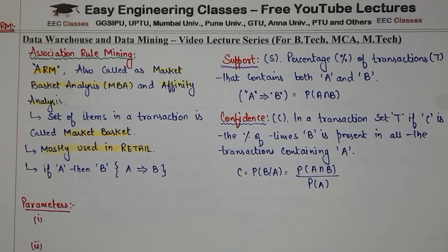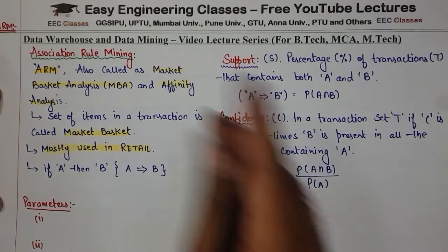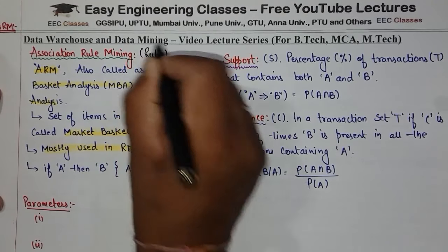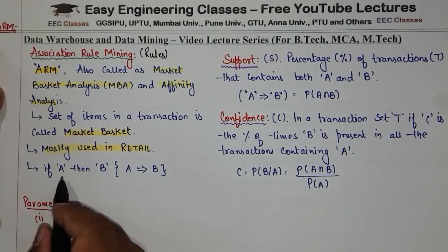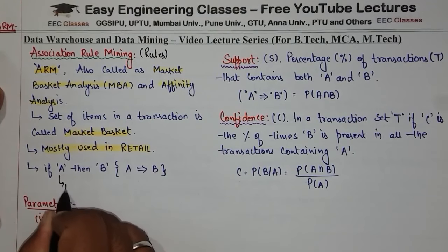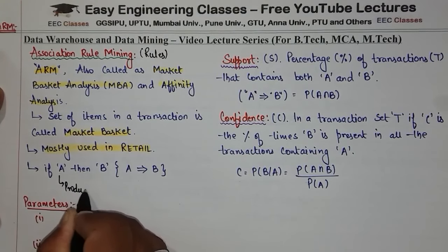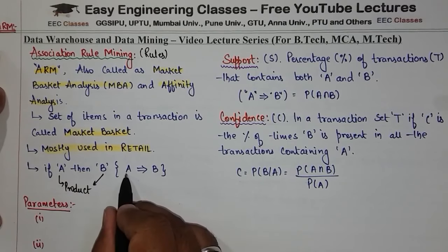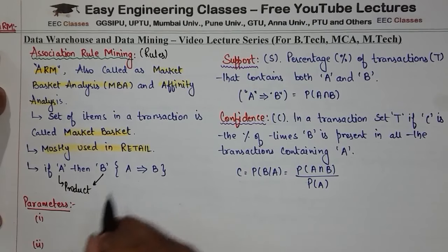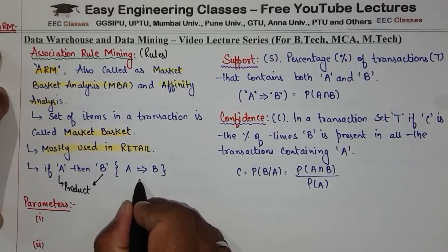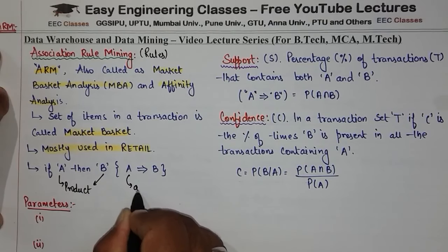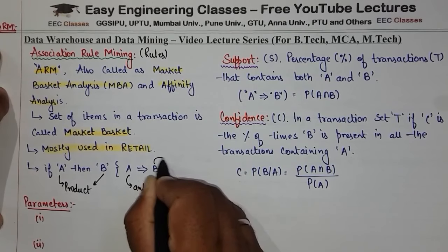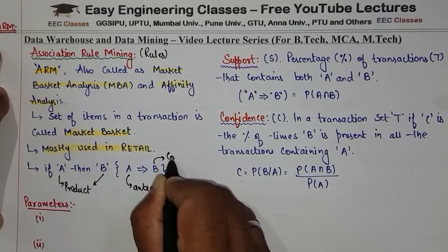Let us see an example to understand what Association Rule Mining is basically doing. If we generate certain rules — for example, if I have a product A and a product B, we say 'if A then B', written as A → B. Here, A is called the Antecedent and B is called the Consequent.